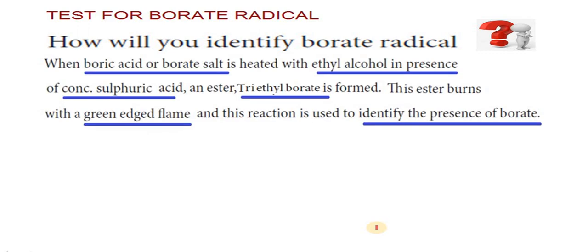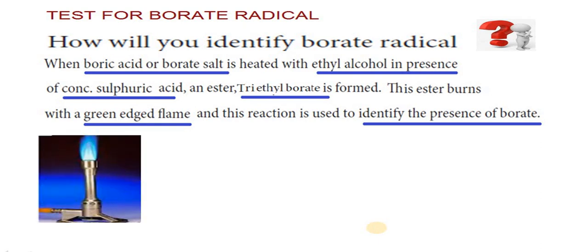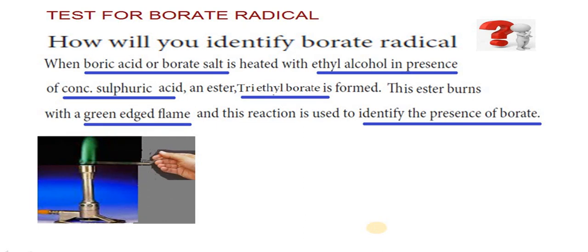The next one. Test for borate radicals. What is borate radicals? It is the most important question. BO3 3- is the formula of borate radicals. How do we have to find the presence of borate radicals? When boric acid or borate radicals, it is heated with ethyl alcohol in the presence of concentrated sulfuric acid, an ester triethyl borate is formed. That ester burns with green edged flame and this reaction is used to identify the presence of borate. You see, this is known as benzene burner. Burns with blue flame. Then introduce a glass rod dipped in triethyl borate because triethyl borate is a liquid. If you show that glass in benzene burner's blue flame, it turns into green. It shows the presence of borate radicals.